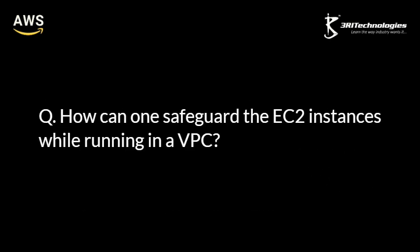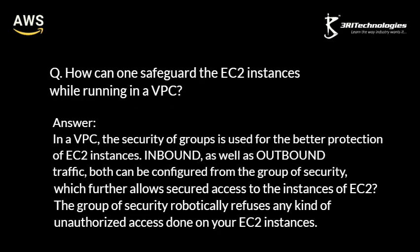How can one safeguard the EC2 instances while running in a VPC? In a VPC, security groups are used for the better protection of EC2 instances. Inbound as well as outbound traffic both can be configured from the security group, which further allows secured access to the EC2 instances. The security group automatically refuses any kind of unauthorized access on your EC2 instances.